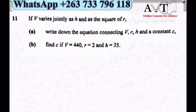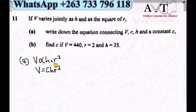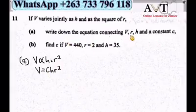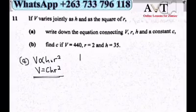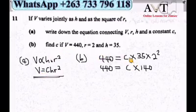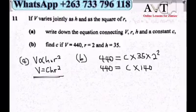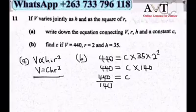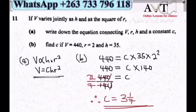Question 11: V varies jointly with h and the square of r. This means V = c·h·r², where c is a constant. For part b, substituting V = 440, h = 35, r = 2: 440 = c × 35 × 4 = 140c. Dividing both sides by 140 gives c = 440/140, which simplifies to 22/7.